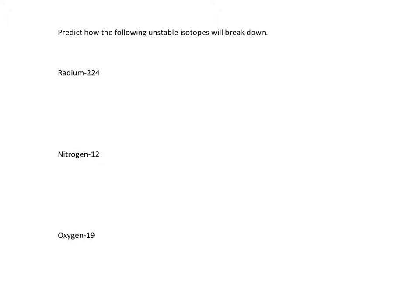So this first one, radium-224, has 88 protons and 136 neutrons. So any atom that has more than 82 protons is unstable. It doesn't matter how many neutrons you have, you can't get it to be stable. And most of these really large atoms are going to break down through alpha decay.